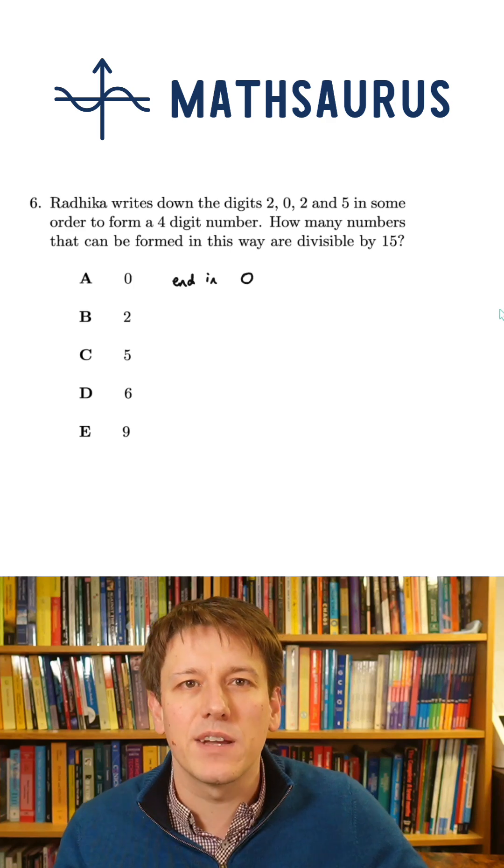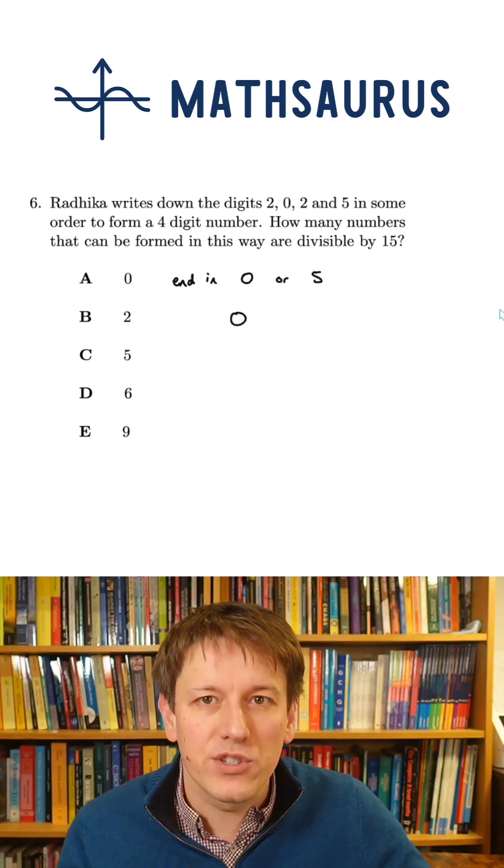So to be a multiple of 5, the number just has to end in a 0 or a 5. So we've got two cases to consider.